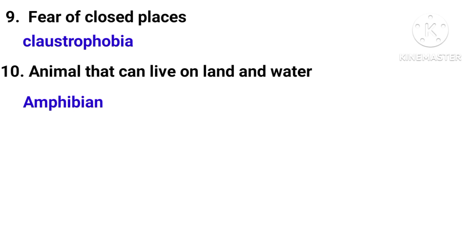It's called claustrophobia. The last question, question number ten: an animal that can live on both land and water — what is it called? It's called an amphibian. A frog is a perfect example. This will be known to biology students.